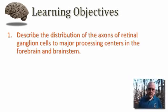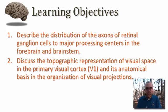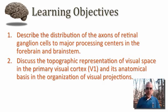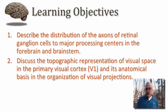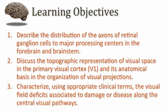My learning objectives for you today are to describe the distribution of the axons of retinal ganglion cells to the major processing centers in the forebrain and in the brain stem. I want you to be able to discuss the topographic representation of visual space in the primary visual cortex and its anatomical basis in the organization of the visual projections. Both of these objectives carry over from a previous session on the distribution of information from the retina to the brain, so if you've not yet viewed the tutorial on the central visual pathways, now's the time to do that before proceeding. My final goal for you at the conclusion of this tutorial would be to characterize, in appropriate clinical terms, the visual field deficits that are associated with damage or disease along the central visual pathways.